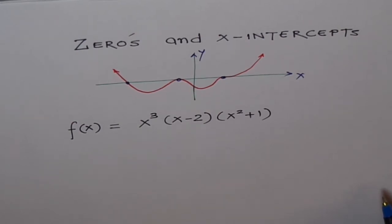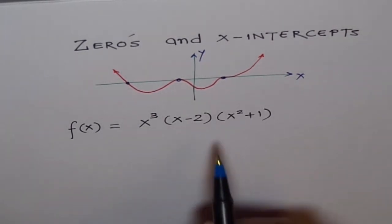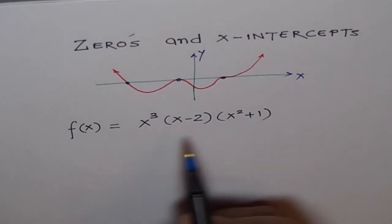Well, it is not wrong but there are some very fine differences. Now I will take an example here to show you those differences. f(x) equals X³(X-2)(X²+1). Look at this function.